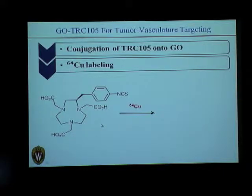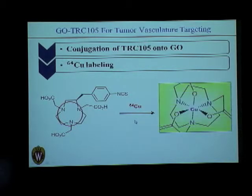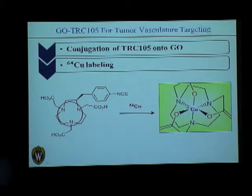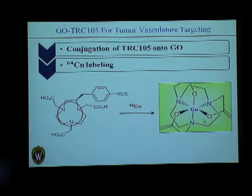We then carried on with copper-64 labeling. When we incubate with copper at a particular pH, the copper atom fits inside the cavity formed by the carbon bridges and nitrogen atoms of NOTA. The bonds formed are coordinate bonds, which are quite strong — this is how we radiolabel the graphene conjugates.